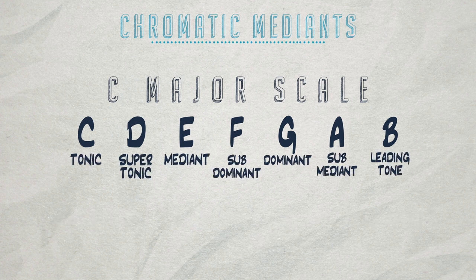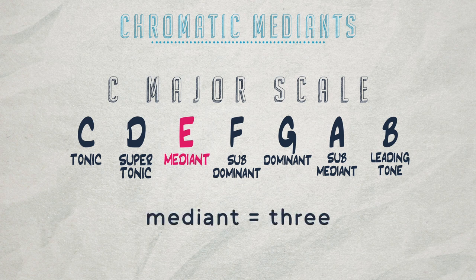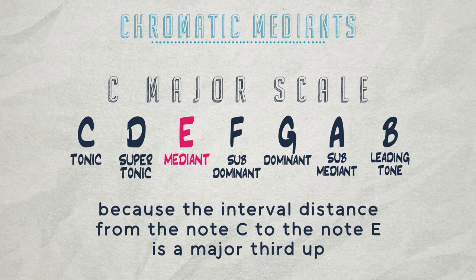They all have names as well. For example, the third scale degree, the note E, is called the mediant. The word mediant stands for three because the interval distance from the note C up to the note E is a major third.